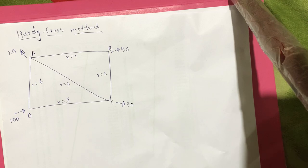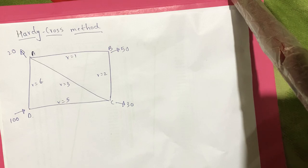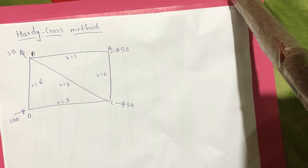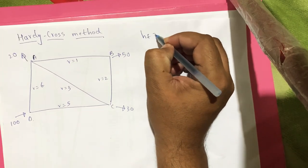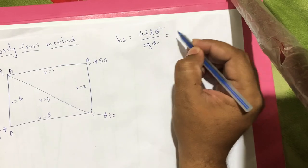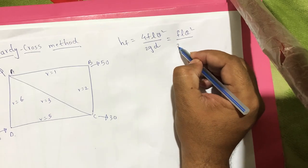Probably the last topic of this chapter is pipe network. The diagram you can see is a pipe network to be analyzed. There are five pipes: AB, BC, CD, and AD. We need to find what discharge should be given to each pipe based on the constant values visible as small r. This small r is the resistance provided by the pipe towards the flow. The equation of Hardy Cross is HF = 4FLv²/(2gD), which in terms of discharge can be written as FL·Q²/(3D⁵).